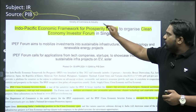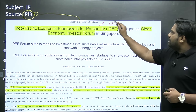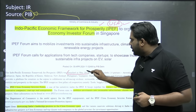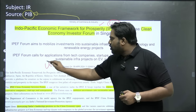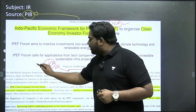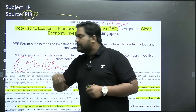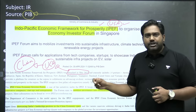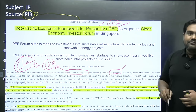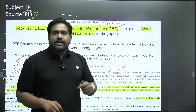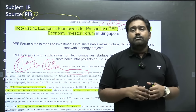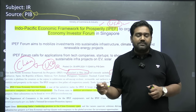IPEF stands for Indo-Pacific Economic Framework for Prosperity, an initiative started by the United States. In 2022, this initiative was launched by the US to bring Indo-Pacific countries together to promote economic prosperity in the Indo-Pacific region. It is seen as a counter to China's economic dominance in the Indo-Pacific. Initially 12 countries joined; today there are 14 countries, including major Indo-Pacific powers like Australia, New Zealand, Japan, India, and many Southeast Asian economies like Singapore, Thailand, Vietnam, and Brunei.